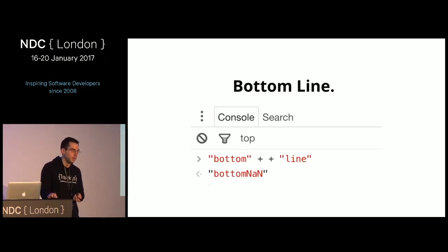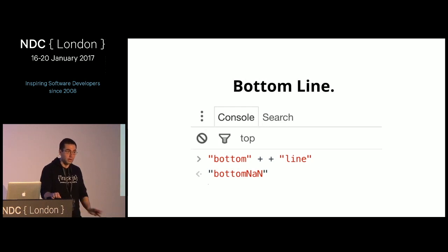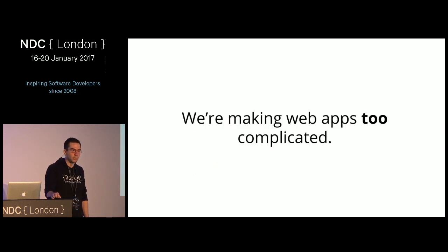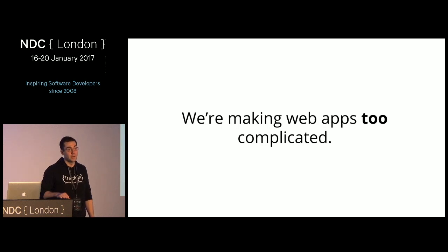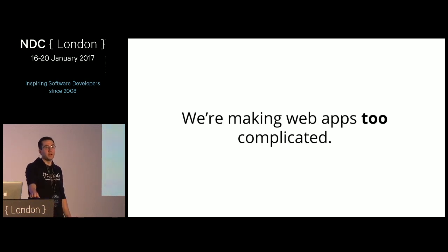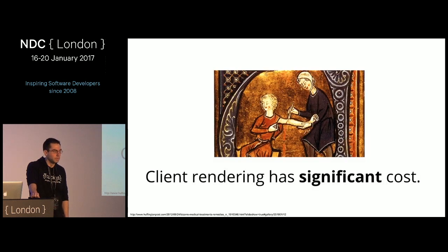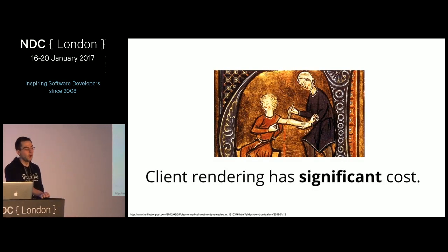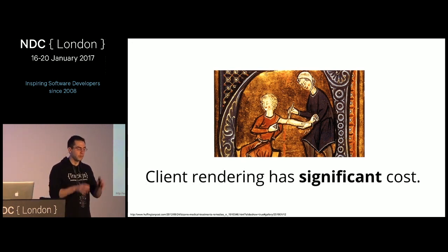So what's the bottom line? My main point is that we're making web apps too complicated. It used to be that you could open Notepad, create an index.html, put some angle brackets on the page, FTP it somewhere, and you're off to the races. All these abstractions and complexities we've created — are they actually helping us? Are they getting our apps out faster and delivering client value faster? Client rendering has a significant cost, and I hope everyone realizes that if you choose the single page application route there's a whole bunch of things that aren't going to work like you expect.